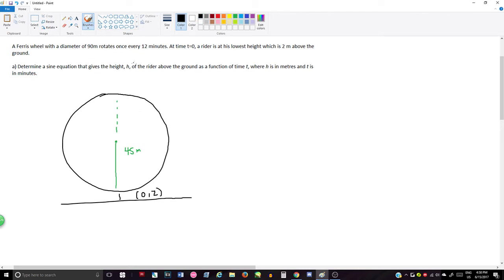Determine a sine equation that gives the height h of the rider above the ground as a function of time t, where h is in meters and t is in minutes. So what we want to do here is we need to grab this value here. We need to divide it by 4, which gives us 12 divided by 4 is 3. So each time it goes a quarter, it's going to be 3 minutes have passed.